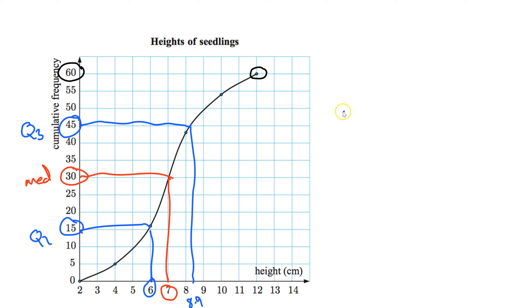If you want to find the IQR, it's Q3 minus Q1, so it would be, in this case it would be 8.4 minus 6, or 2.4. So that's one thing you can do with this graph.